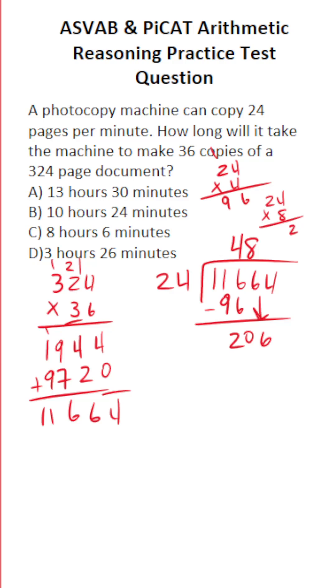4 times 8 is 32, carry a 3. 2 times 8, 16, 17, 18, 19. So this is 192.